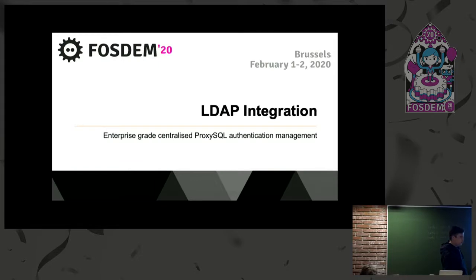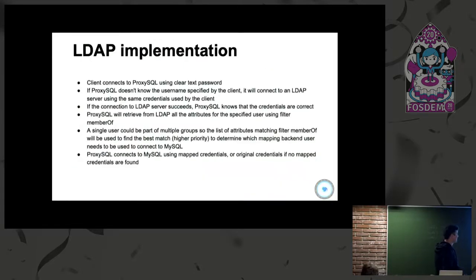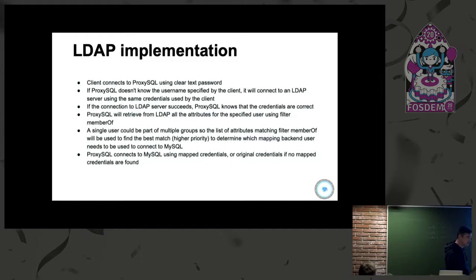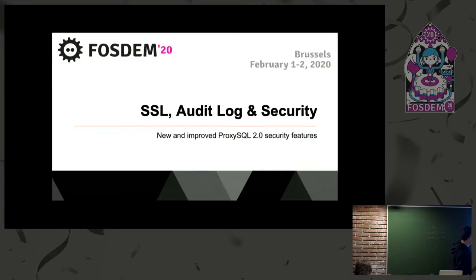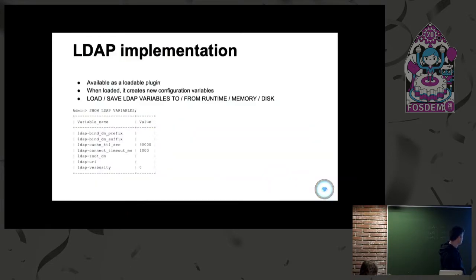LDAP integration is still rudimentary but there will be active development over the next few months. When a client connects to ProxySQL and ProxySQL doesn't find those credentials in its own user list, it connects to LDAP and tries to authenticate by checking multiple groups. If mapped credentials are found, the user is allowed in. It's available as a separate plugin — not yet on the website — and configuration is simple: just specify your prefixes, suffixes, and URI.